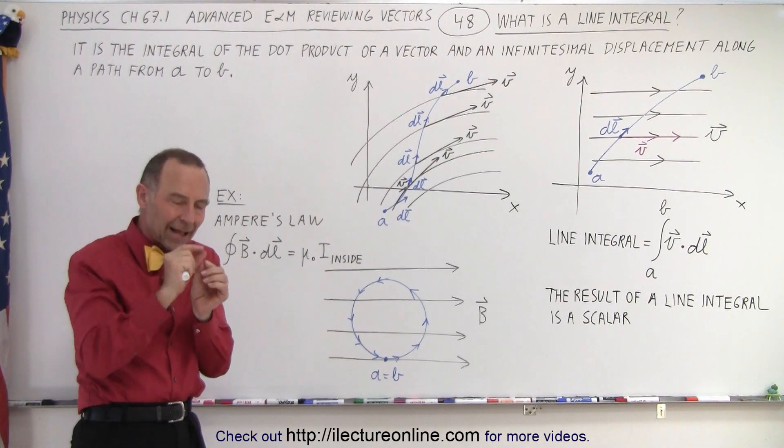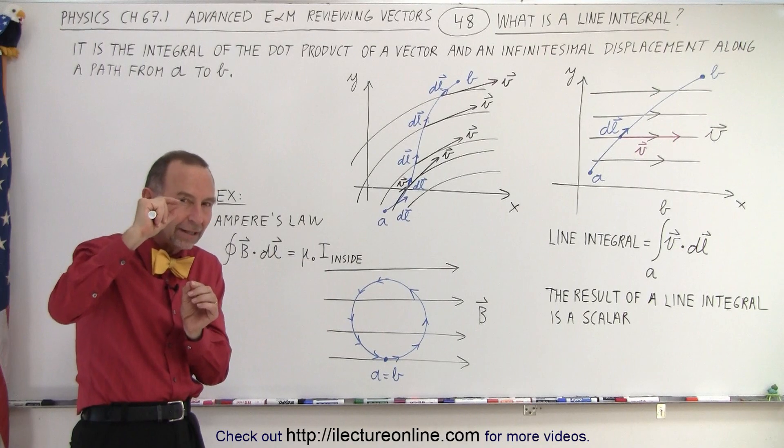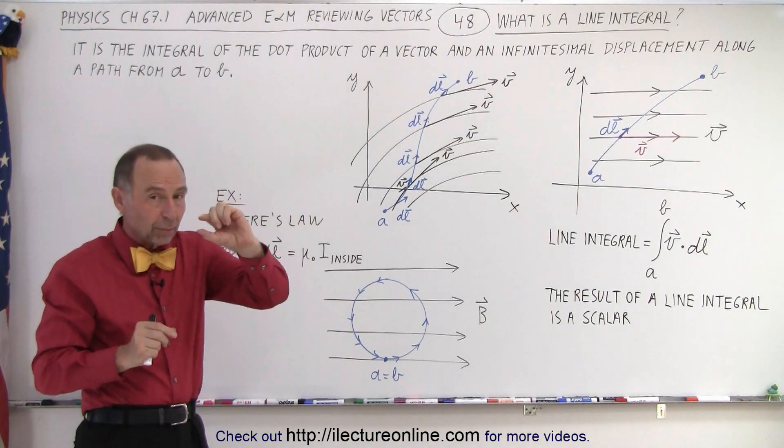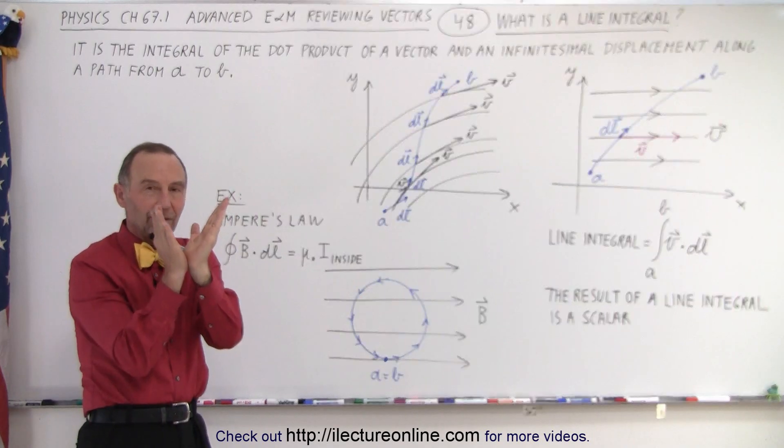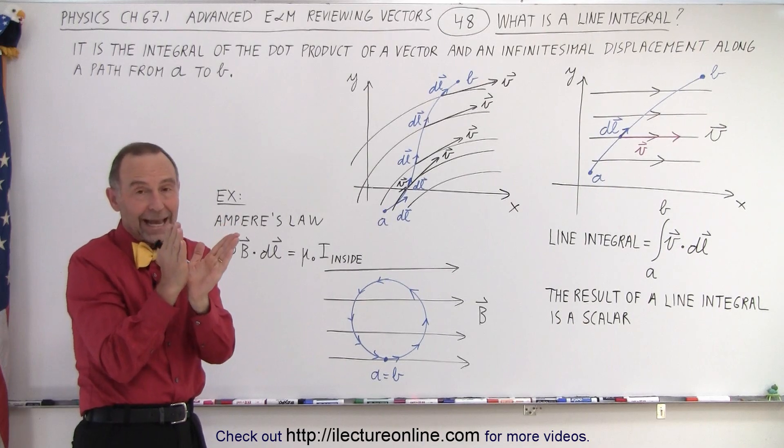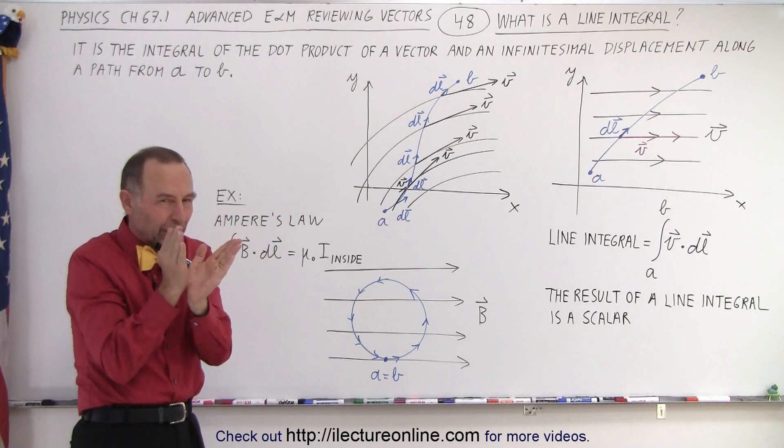And along the way, each time you move an infinitesimal amount of distance, you multiply via the dot product the small displacement, which is a vector quantity, with the vector. The strength of the vector or the magnitude of the vector and the direction of the vector at that particular point.